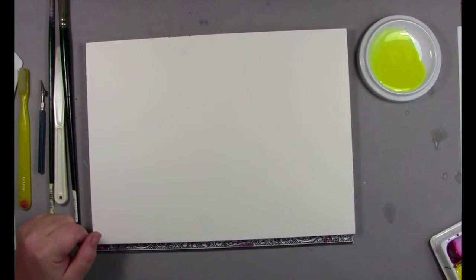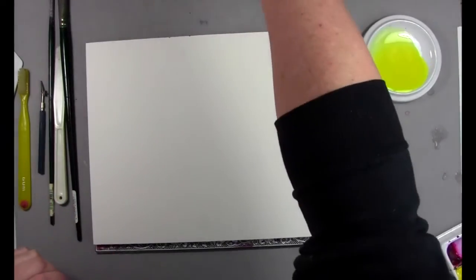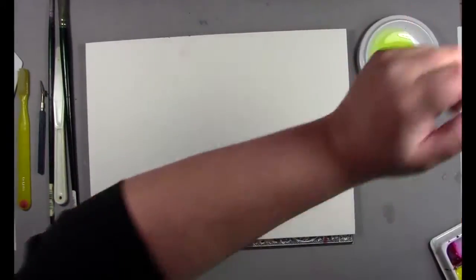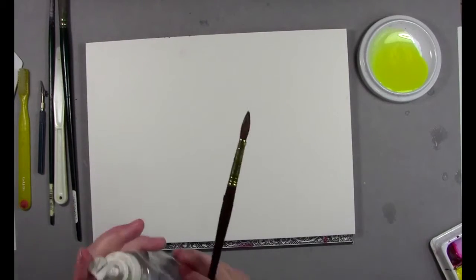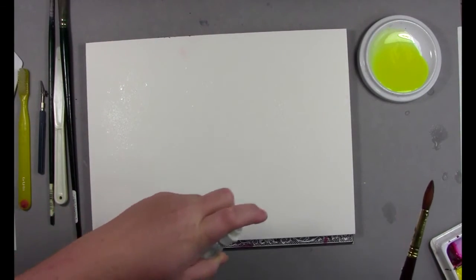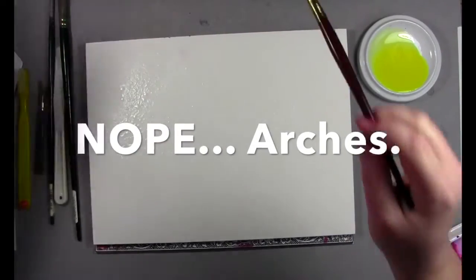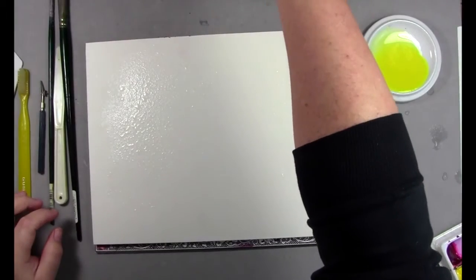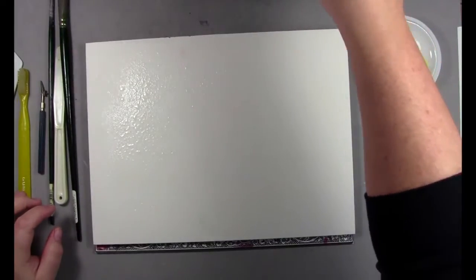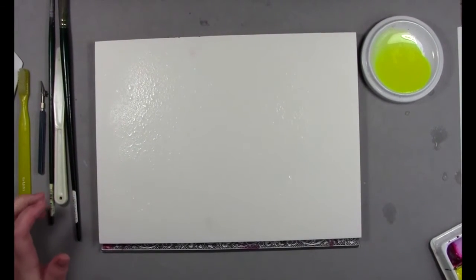So I'm gonna paint a very basic flat wash. I'm gonna get this wet first. Spray it. I'm using 140 pound hot press Windsor Newton watercolor paper. I use hot press to test because I use hot press when I paint almost exclusively, and I want to make sure that my tests react the way they would on the paper that I use most often.